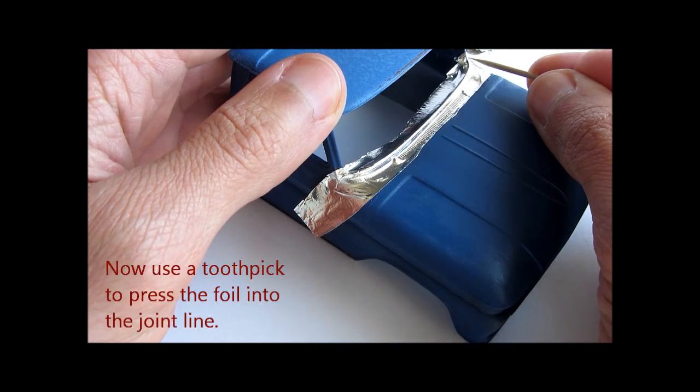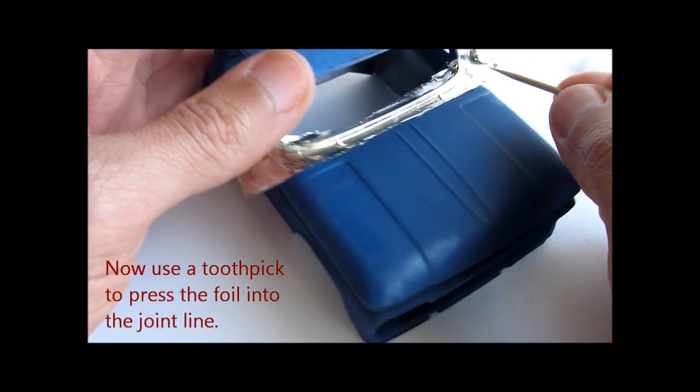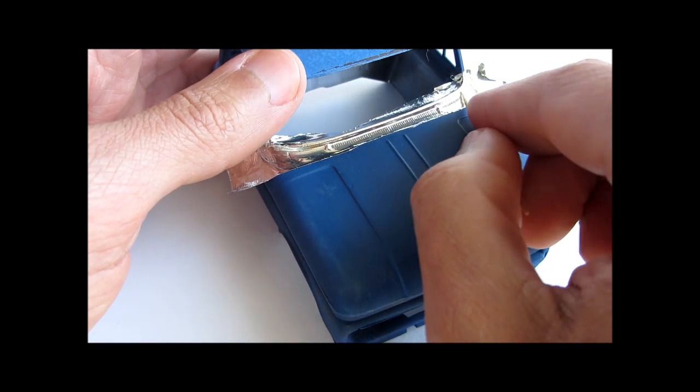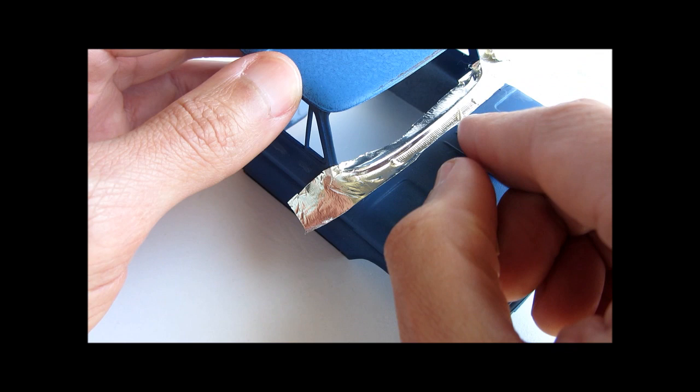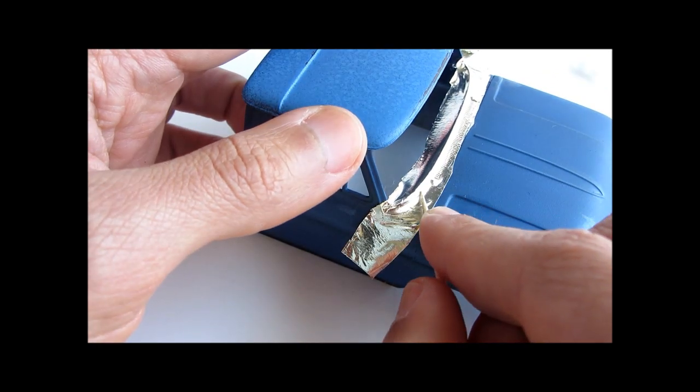Now when that's done, take a toothpick and run it into the separation line between the trim and the hood. Bare metal foil is very malleable and will stick down into those nooks and crannies. You just need to press it in.